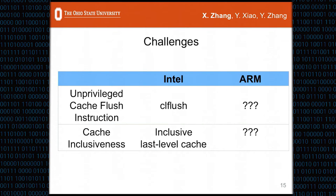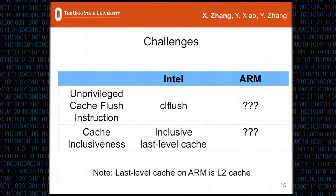To conduct Flush+Reload attacks on ARM, there are mainly two challenges. First, on Intel x86 we use CLFLUSH to perform a flush, but on ARM the unprivileged cache flush instruction is unknown. Second, Flush+Reload works on Intel because they have inclusive last-level caches, but cache inclusiveness on ARM is also unknown. Note that the last-level cache on ARM is the L2 cache, so from now on when I say L2 cache, it means last-level cache.